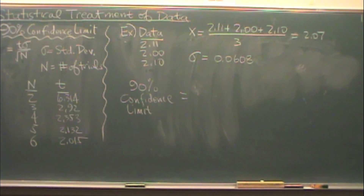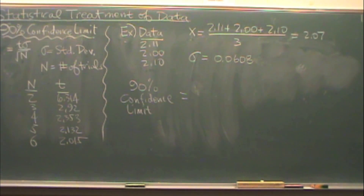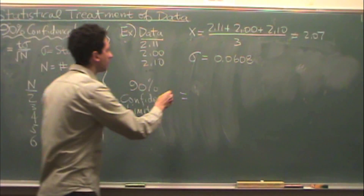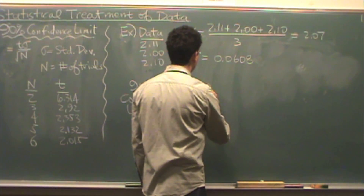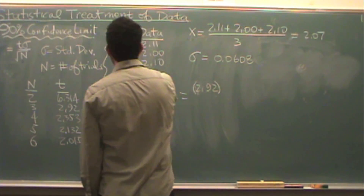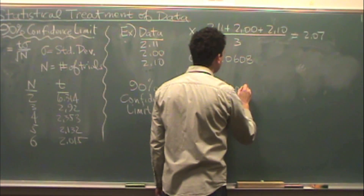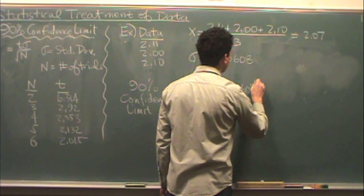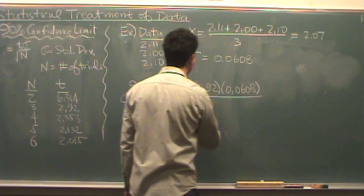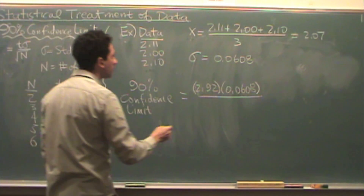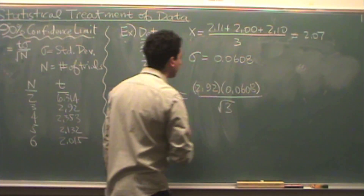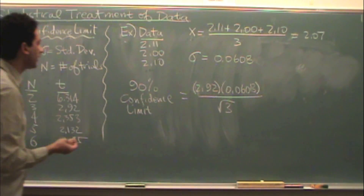Looking at the table, t in our case — we have three data points — so that's 2.92. Times sigma, which is our standard deviation. I showed you how to do that in a different video. Divided by the square root of the number of trials, in this case 3.